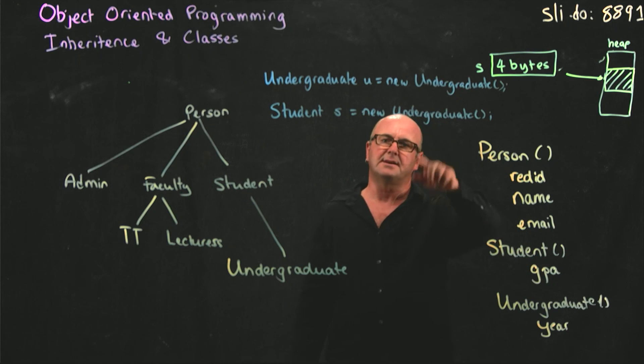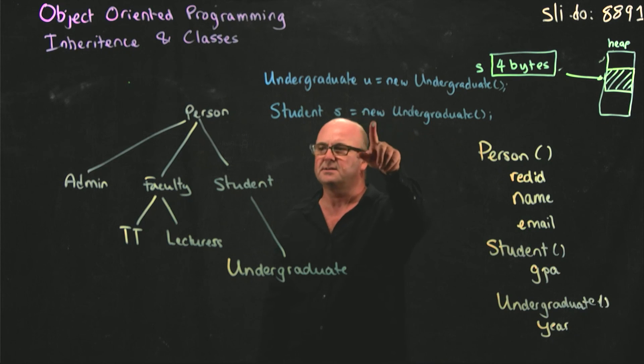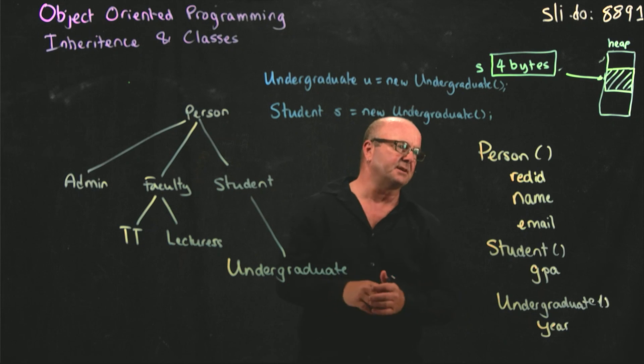Because undergraduate includes on the heap space for everything in student, this is valid code because we have enough space on the heap. You don't have access through s to any of the methods from undergraduate, but there's space there that's stored for them.